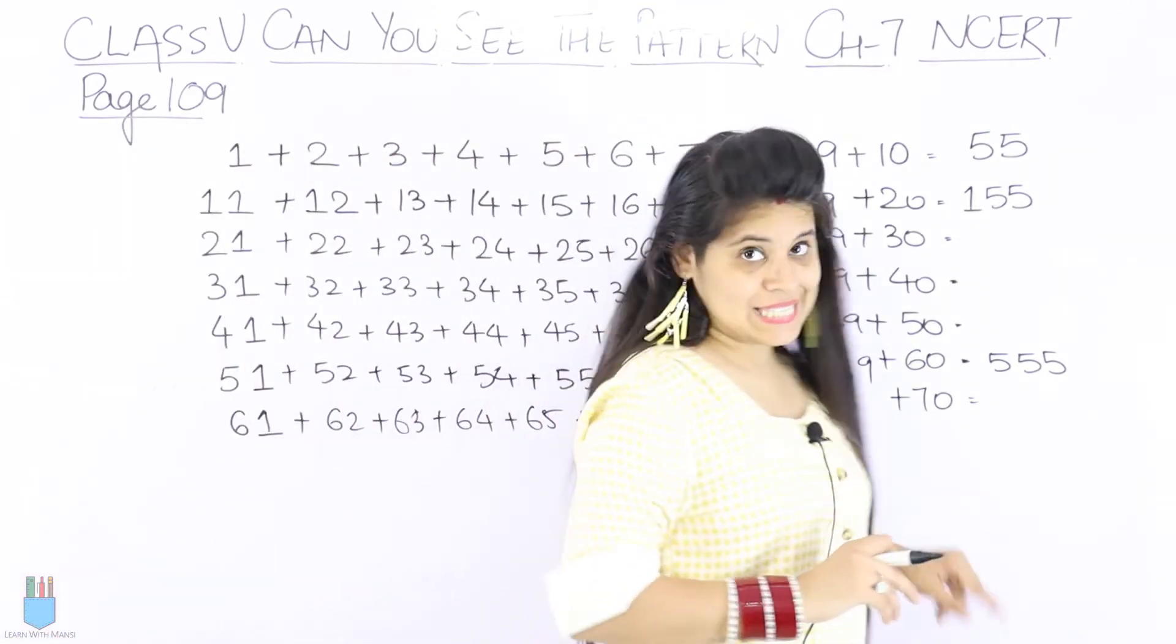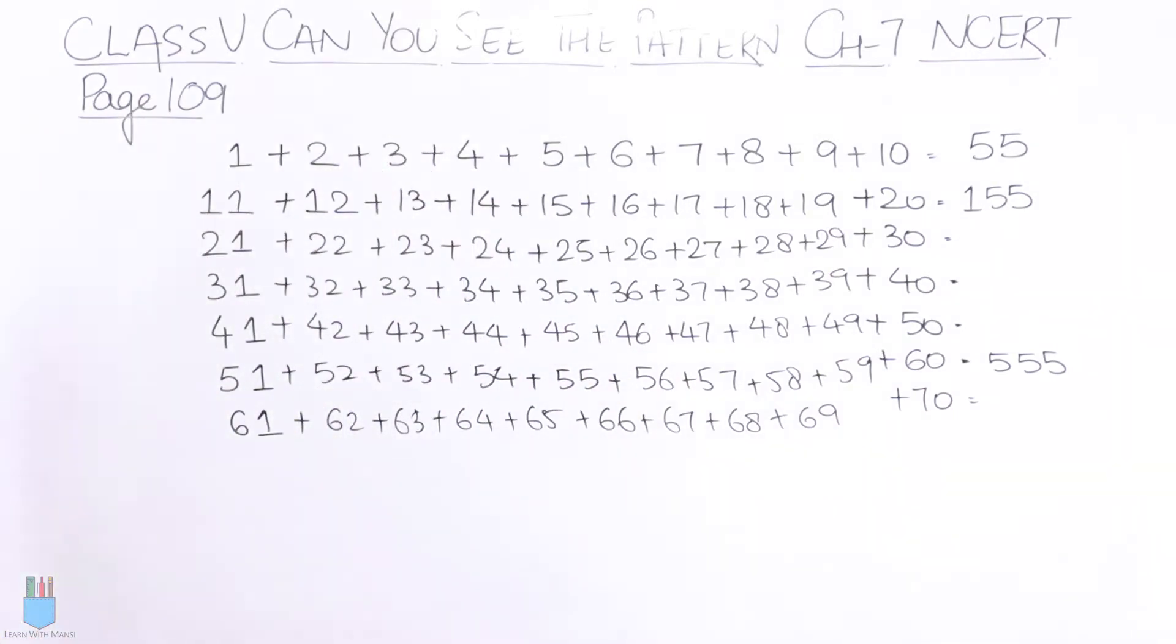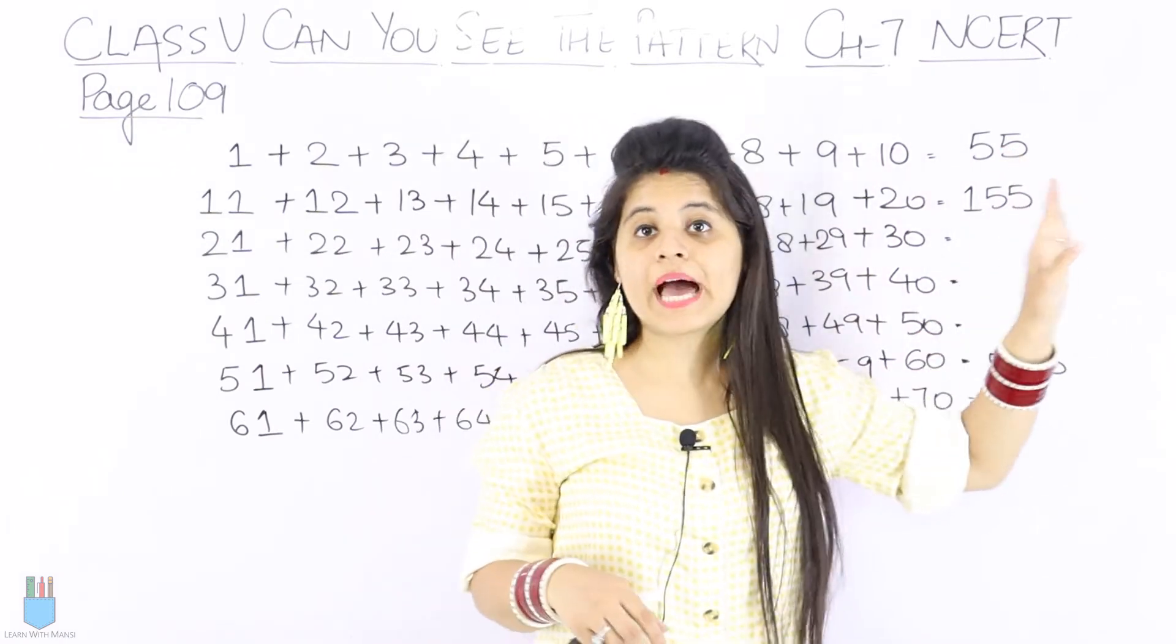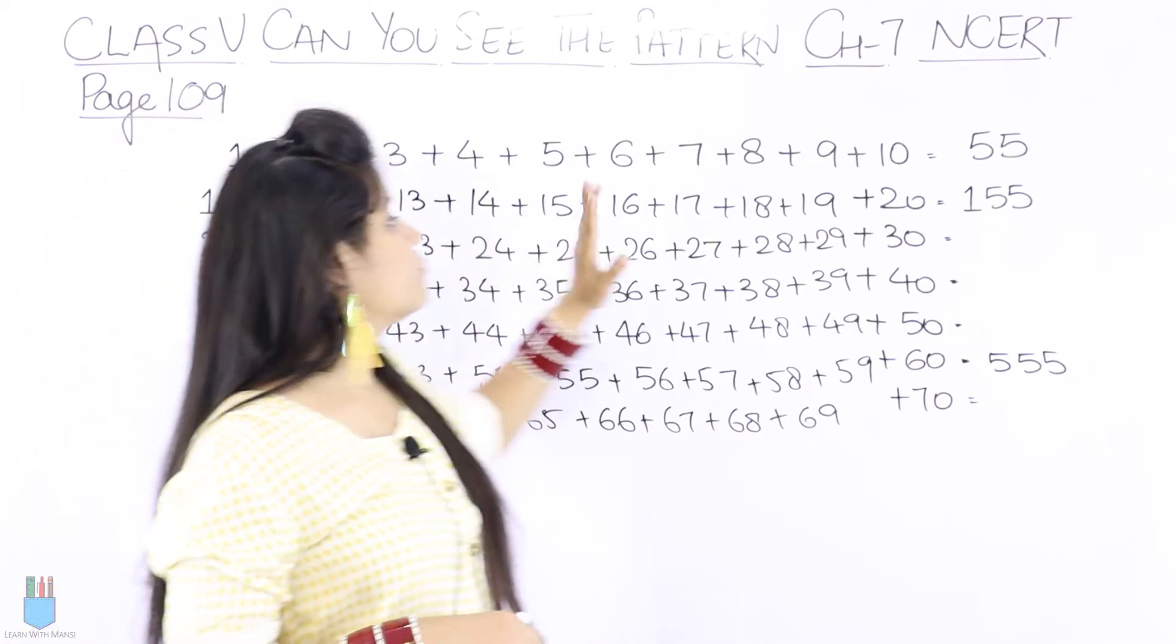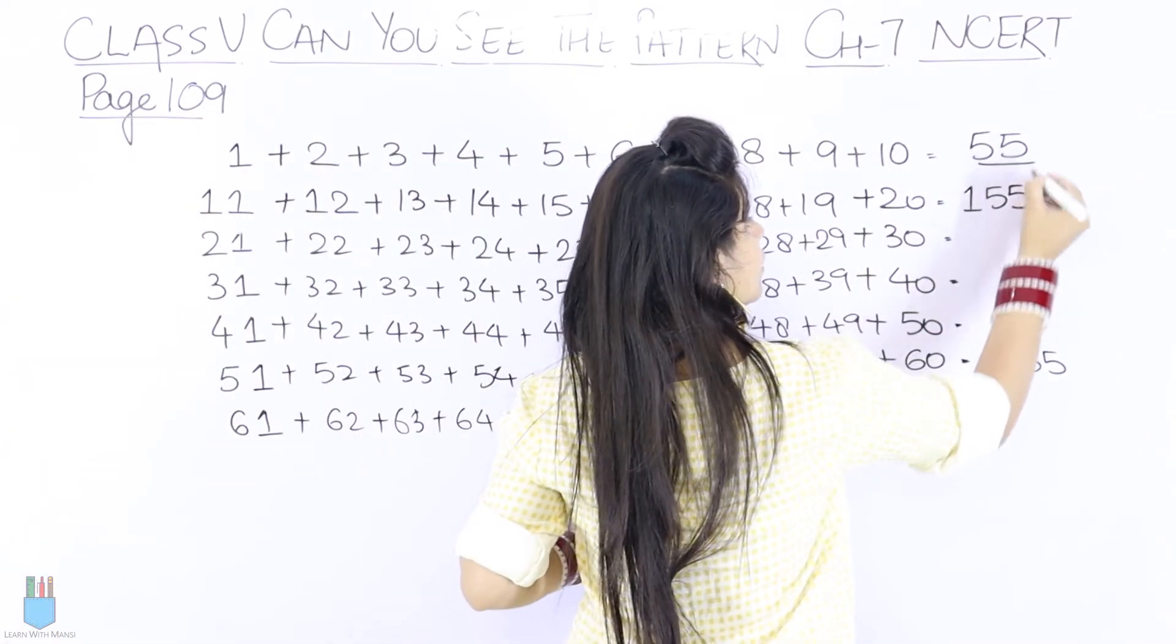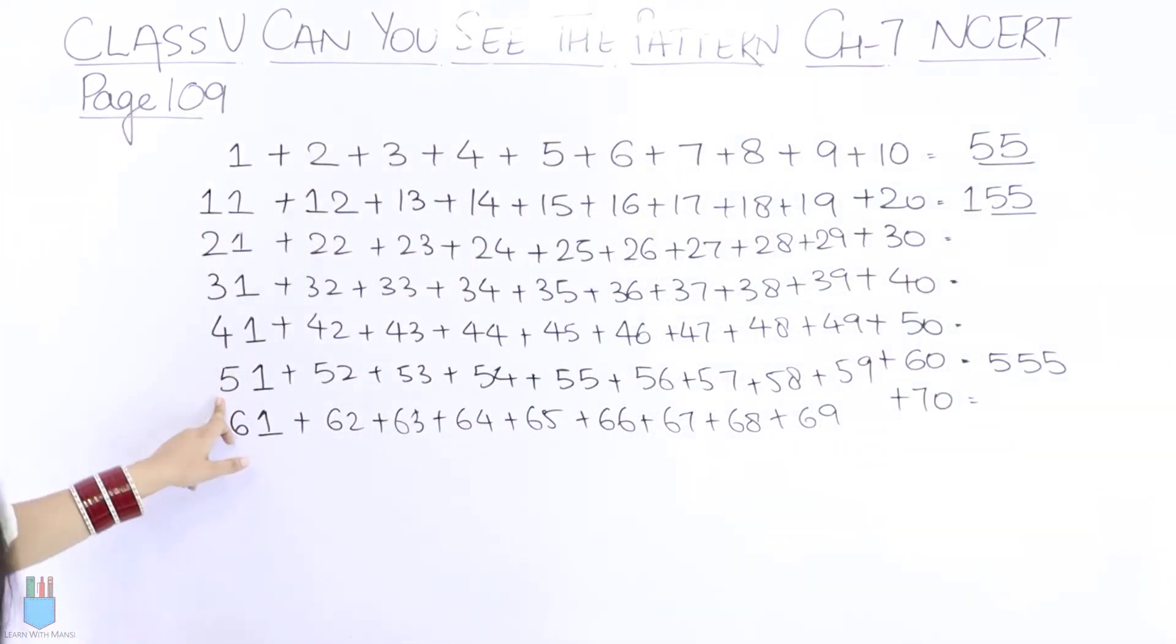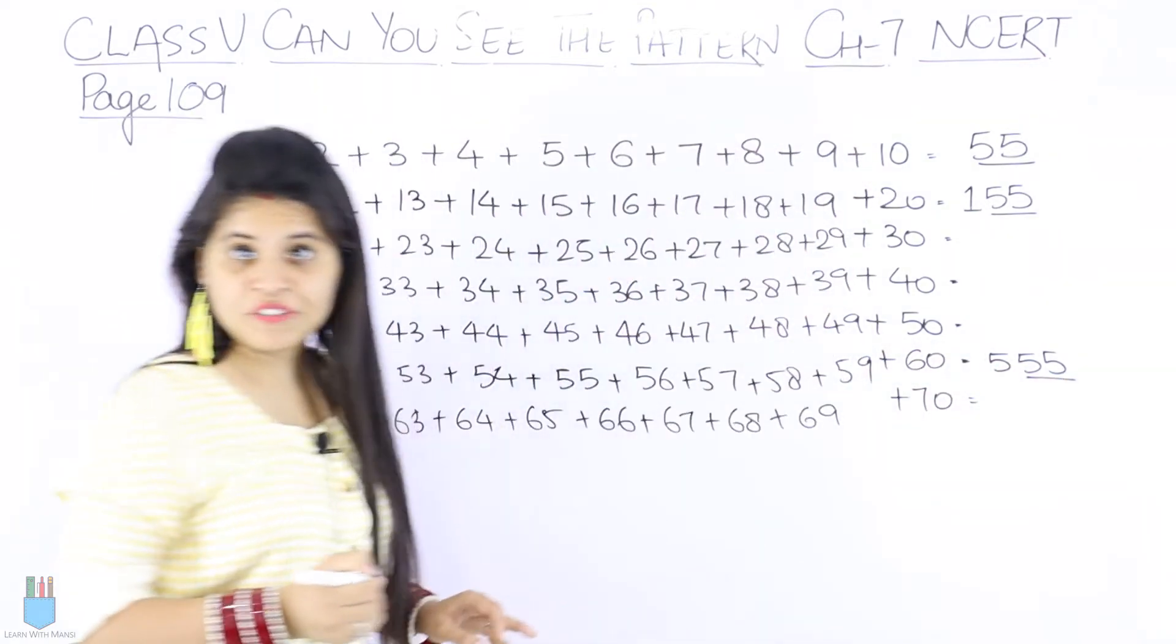Let's see what patterns are going. Let's look at the answers we have given. When we add 1 to 10, we get 55. When 11 to 20, we have 155. What is common? 55. When 51 came, we came to 555 again. 55 is common.